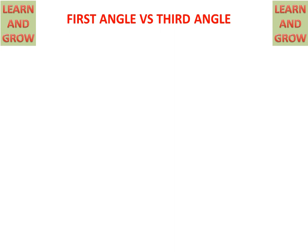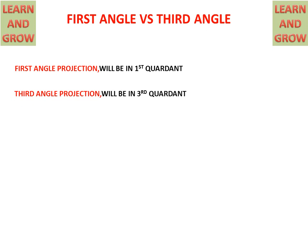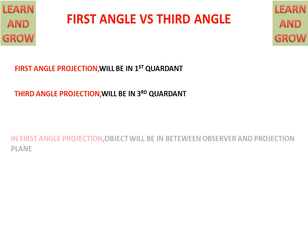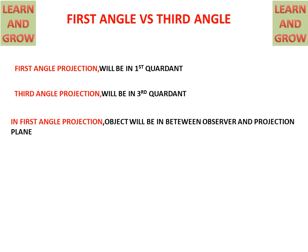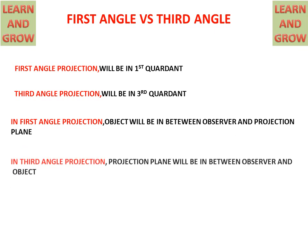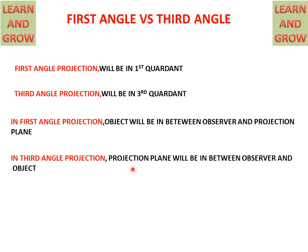Today we will discuss first angle projection and third angle projection. First angle projection will be in the first quadrant, and third angle projection will be in the third quadrant. In first angle projection, the object will be between the observer and the projection plane. But in third angle projection, the projection plane will be between the observer and the object.